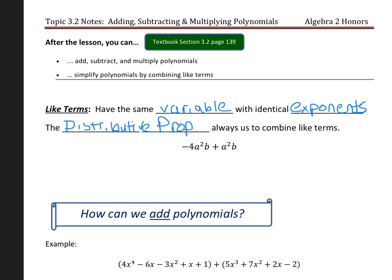So in this example below, I have identical variables with identical exponents. I have a variable a with a power of 2 and a variable b. So I'm going to factor out that using the distributive property in reverse. So I'm going to take out a²b. And what I would have left is a negative 4 plus 1.